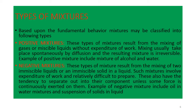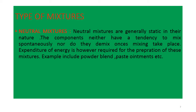Negative mixers हमेशा immiscible liquids से बनाए जाते हैं. इन्हें बनाने के लिए work करना पड़ता है — जैसे suspension और emulsion. ये ऐसे systems हैं जिन्हें work लगाकर या suspending agent लगाकर mix करते हो, लेकिन work हटाने पर ये दुबारा separate हो जाते हैं. Neutral mixers मुख्यतः स्थिर होते हैं — ये न बहुत जल्दी mix होते हैं न separate. जैसे powder, paste, और ointment.